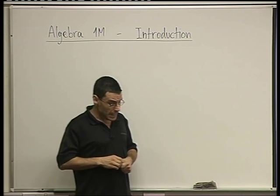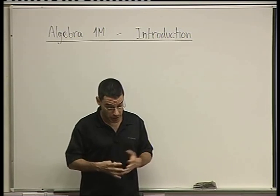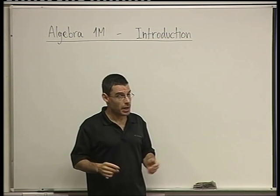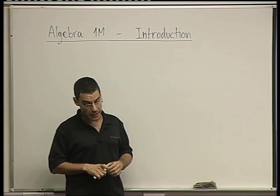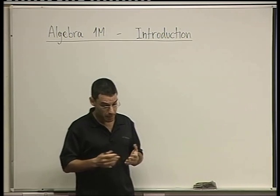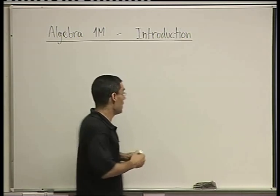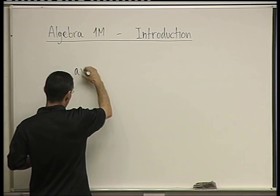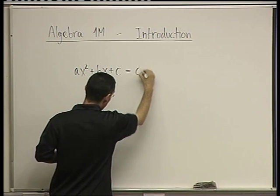Algebra is a field in mathematics where we do calculations, just like arithmetic. But in arithmetic we do calculations with numbers, and in algebra we do calculations with things that are not necessarily numbers. For example, you know what quadratic equations are, like ax squared plus bx plus c equals 0.